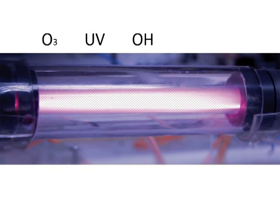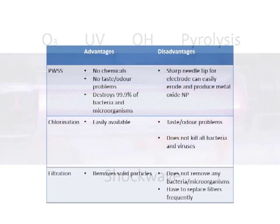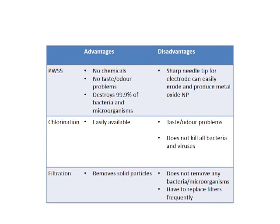The microorganisms will be effectively inactivated, while organic contaminants can be oxidized through contact with active radicals. Other inactivation factors include shock waves and pyrolysis. However, PWSS has a few disadvantages. A very sharp needle is required for the electrode in order to achieve a larger electric field with a minimum applied voltage, and a very sharp tip would be quickly eroded by the discharge. This results in the production of metal oxide nanoparticles that are difficult to remove due to their very small sizes, and the potential danger to human health is not clearly known.